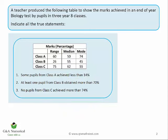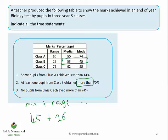Statement two: at least one pupil from class B obtained more than 70%. This time we've got a more than statement, so the rule changes a little bit. If you're dealing with a more than, look at the median and the mode again, but this time pick the smaller of the two. The smaller is the mode at 45 — write that down. This time pretend it's the minimum, not the maximum, and add the range of 26 to that. Minimum plus range gives you the maximum, which is 71.